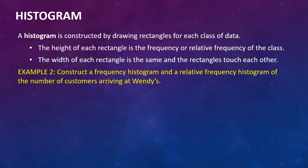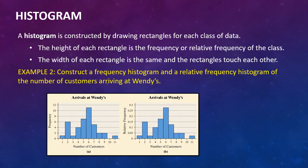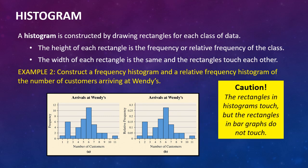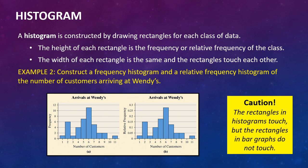Construct a frequency histogram and a relative frequency histogram of the number of customers arriving at Wendy's. Here we can see the data that was just in the last table. In terms of the number of customers, here they're just bar graphs, vertical bar graphs, but the key thing here is that they touch each other. That's probably an interesting Google question. Why is the histogram such a different vehicle than a bar graph and what is the implications of the rectangles touching each other versus not?